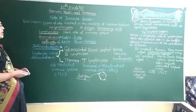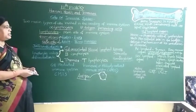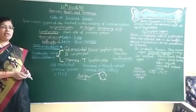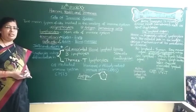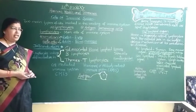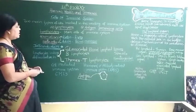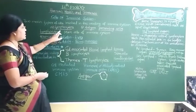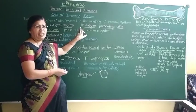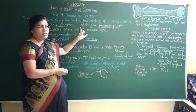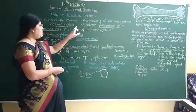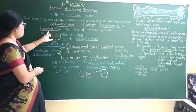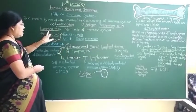There are two main types of cells involved in the working of the immune system: number one, lymphocytes, and number two, antigen presenting cells. So let us begin with lymphocytes.